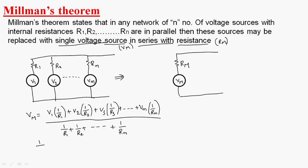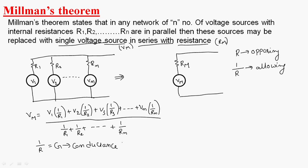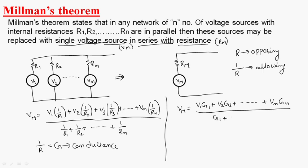What is resistance? Resistance is the property of material which opposes the flow of electrons. The inverse of resistance is conductance — which allows or accepts the flow of electrons — represented with the letter G. Conductance is the property of material which allows the flow of electrons. So we can write Vm as (V1·G1 + V2·G2 + ... + Vn·Gn) divided by (G1 + G2 + ... + Gn).